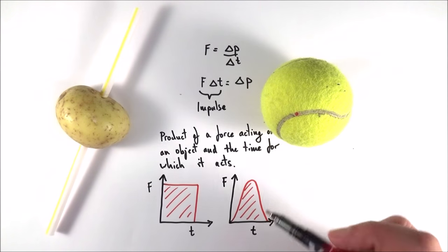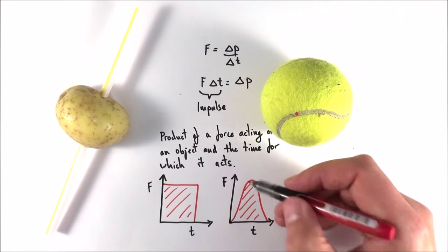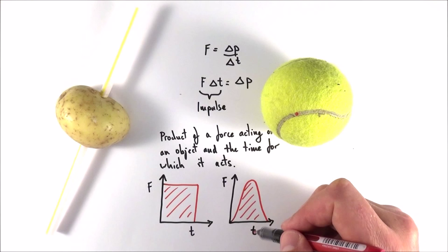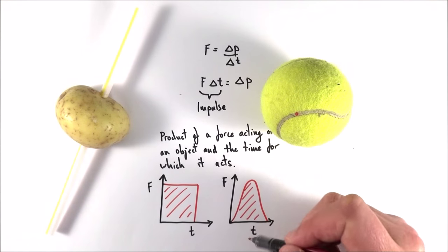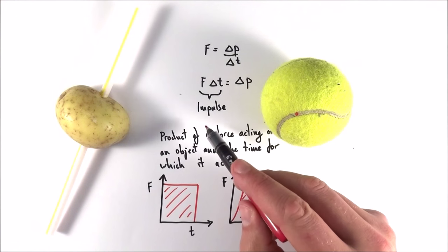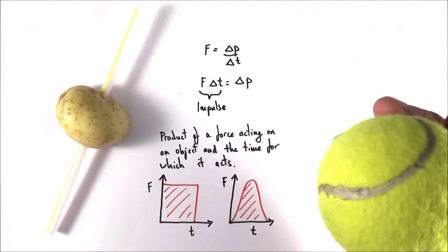When we have some numbers on this, we can't always work it out precisely. We might approximate using triangles, or we might have to count the individual squares, taking note of the size of the force and the time, which is often milliseconds, to find the impulse and therefore the change in momentum of that object.